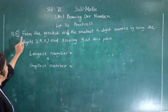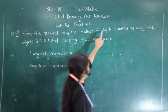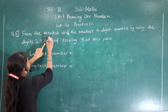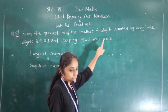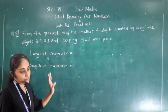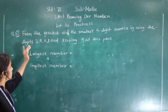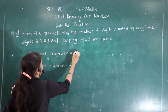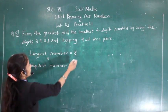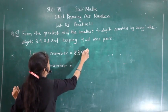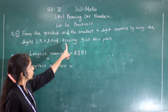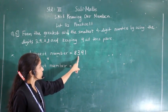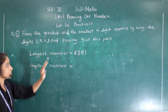Now we will solve question number 5: find the greatest and smallest 4-digit numbers using the digits 3, 9, 8, 1, and keeping 9 at the tens place. So 9 must be at the tens place. Except 9, the greatest digit is 8, then 3, then 9, then 1 — giving us 8391 as the largest number.